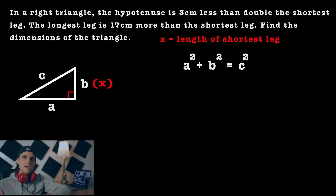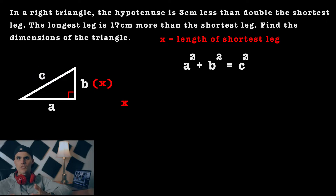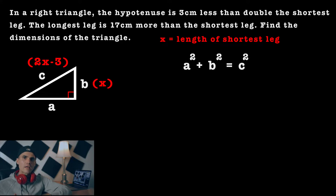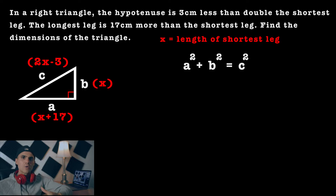The hypotenuse is three centimeters less than double the shortest leg. So if we take the shortest leg x and double it, we get 2x, and three less than that gives us the hypotenuse expression: 2x minus 3. Then the longest leg is 17 centimeters more than the shortest leg, so the expression for that is x plus 17.